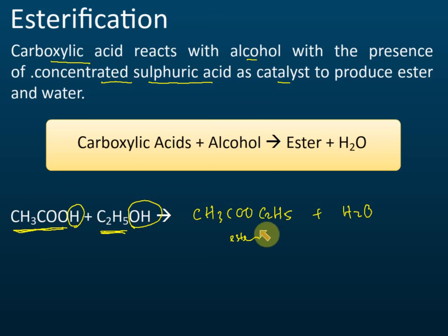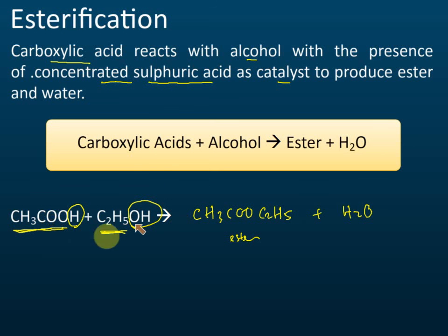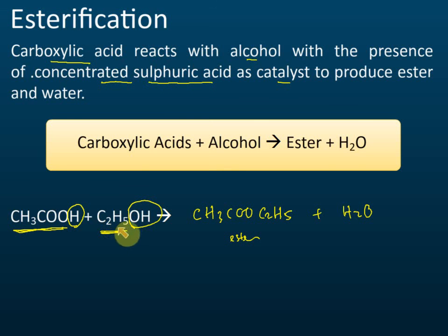In an exam they may ask you to write the formula of the ester formed. For ethanoic acid with ethanol: the formula of the ester is CH₃COOC₂H₅ — taking CH₃COO from the carboxylic acid and C₂H₅ from the alcohol — and H₂O is produced.